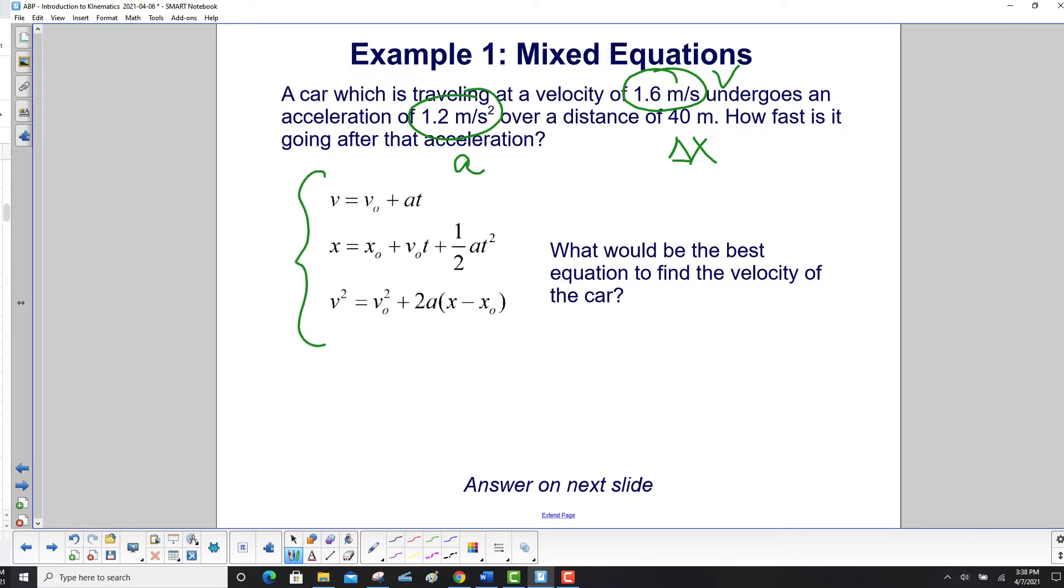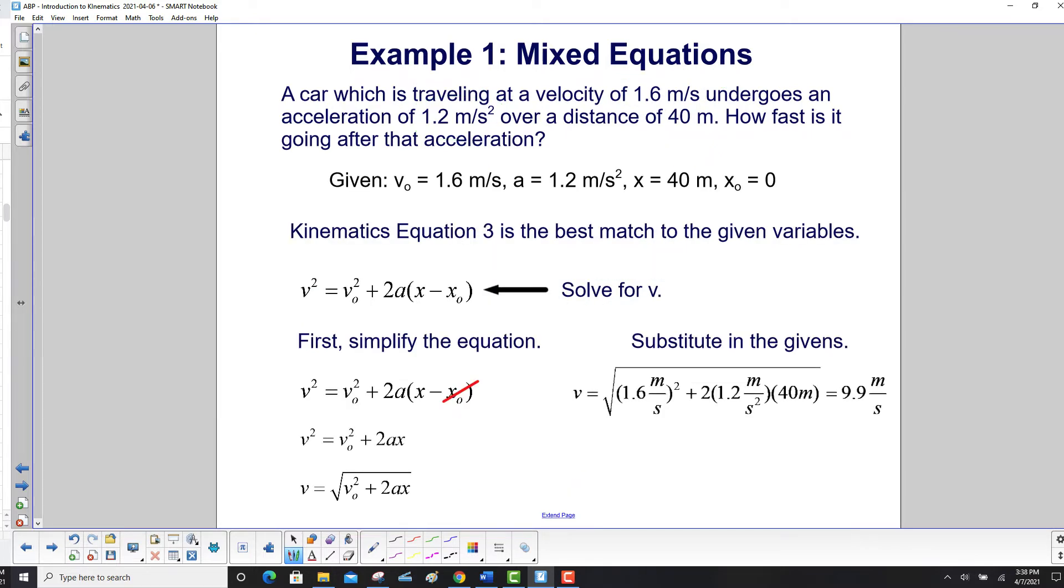The answer will be on the next slide. We have no time in this problem, so if there's no time, go right to kinematics equation 3. So here's our initial velocity, here's our acceleration, here's our final distance, and we say the initial distance is zero.